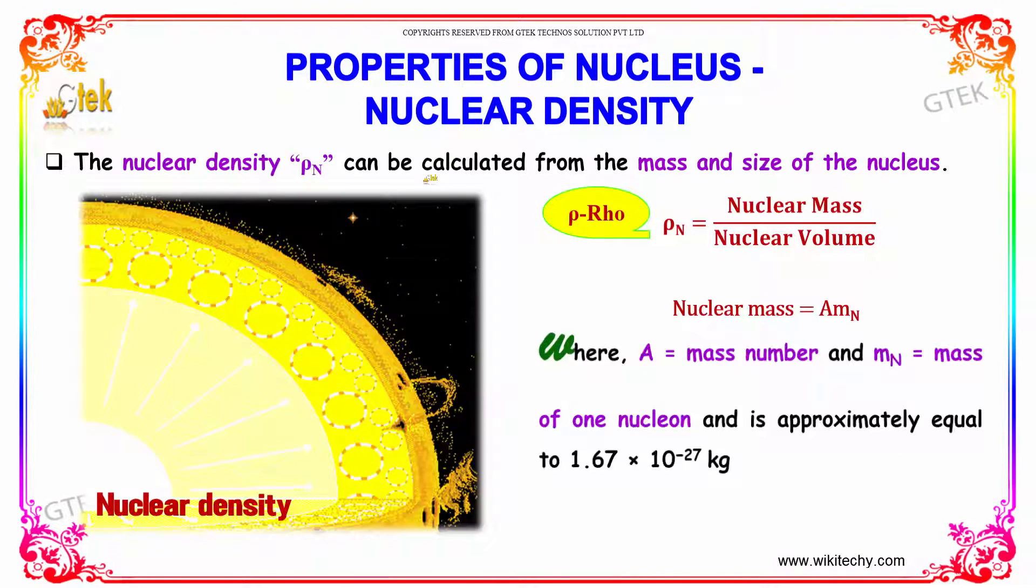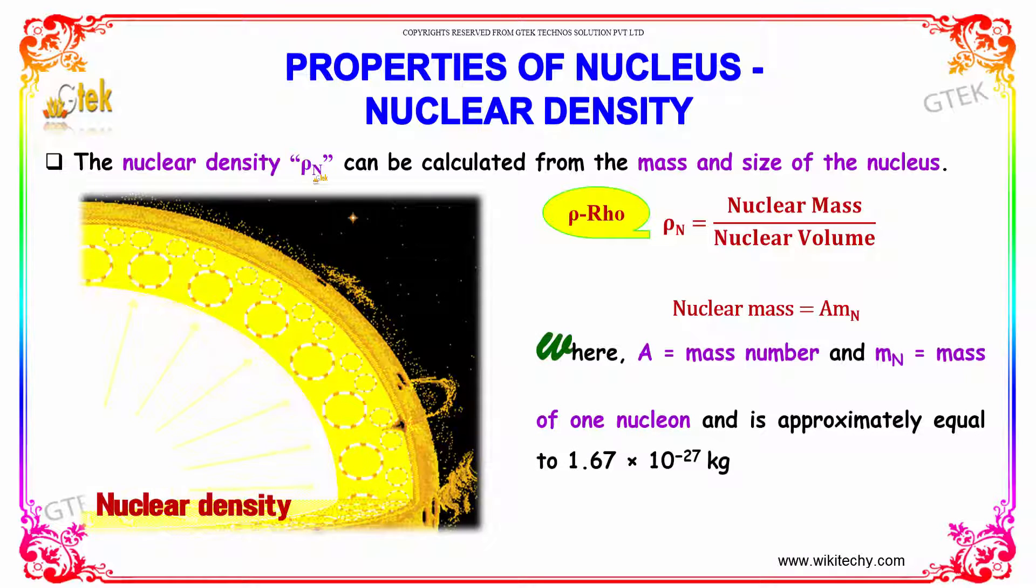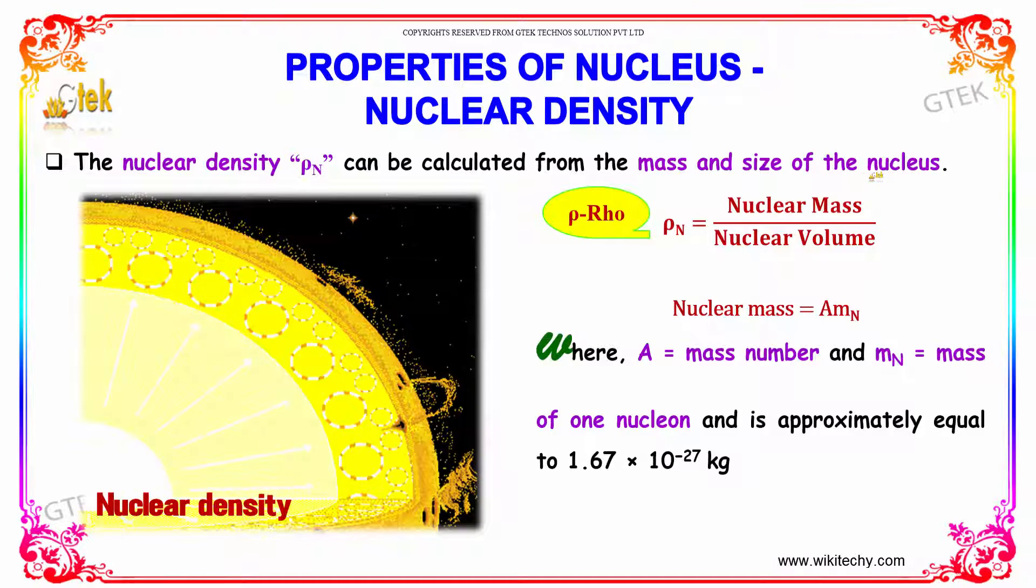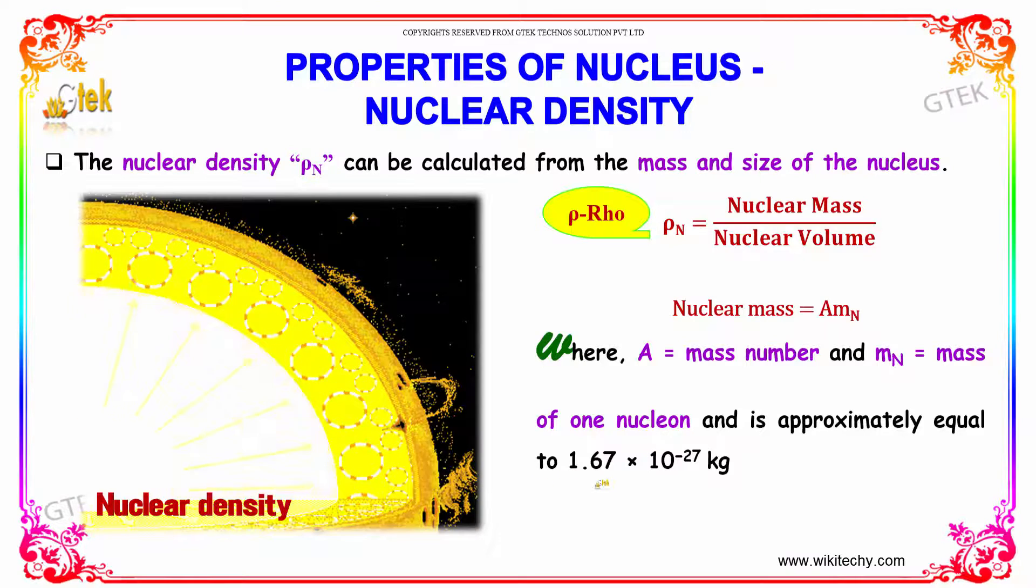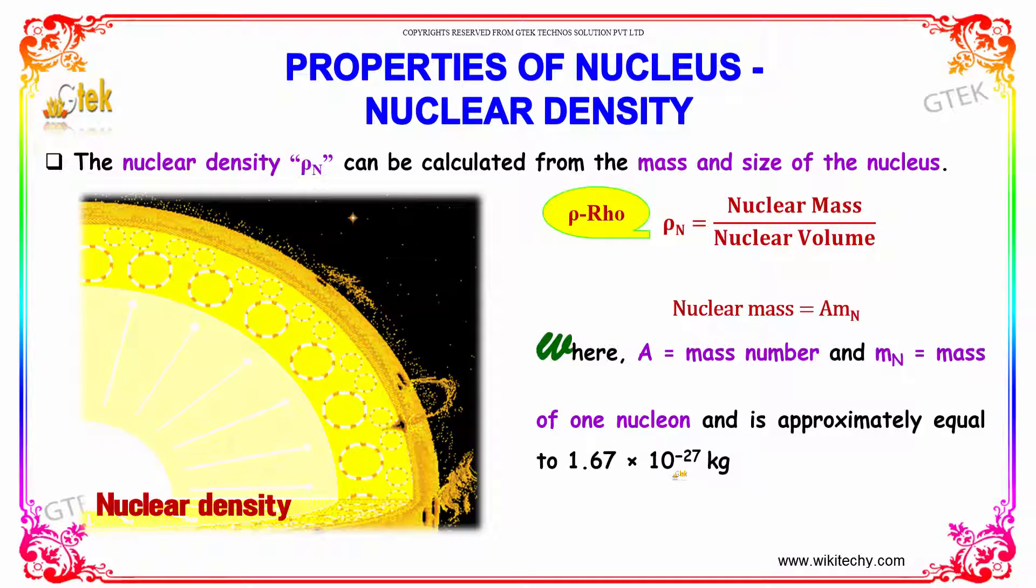If we talk about the nuclear density, it is indicated by rho N. It can be calculated from the mass and size of the nucleus. Rho N equals nuclear mass divided by nuclear volume. Nuclear mass equals A into M into N, where A is the mass number and M is the mass of one nucleon, approximately equal to 1.67 into 10 power minus 27 kilogram.